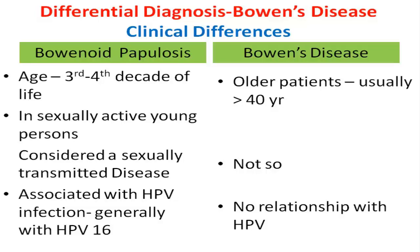The main differential diagnosis of bowenoid papulosis is Bowen's disease, which is also an intraepithelial carcinoma of the skin. The main differentiating features between these two conditions are based on clinical findings. While bowenoid papulosis is seen in younger, sexually active people and is considered a sexually transmitted disease, Bowen's disease is seen in older patients. Bowenoid papulosis is associated with human papillomavirus infection, generally HPV-16, though other HPV genotypes may also be associated. On the contrary, Bowen's disease has no HPV association.